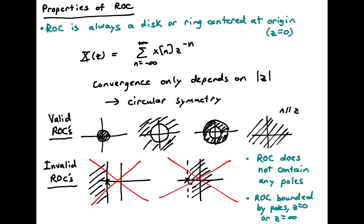Invalid ROCs include regions to the left or right of some point, because those don't have the required circular symmetry. Additionally, the ROC does not contain any poles — a pole is where the function blows up and therefore does not converge. The ROC will be bounded by poles, or by Z equals zero or Z equals infinity.